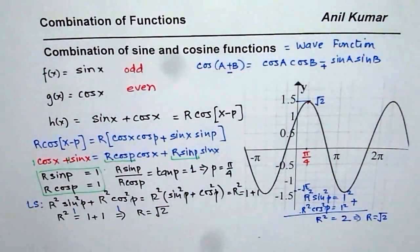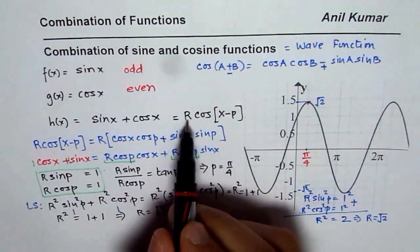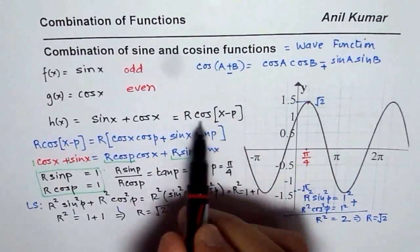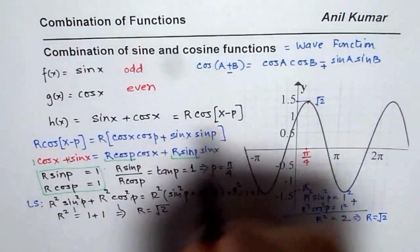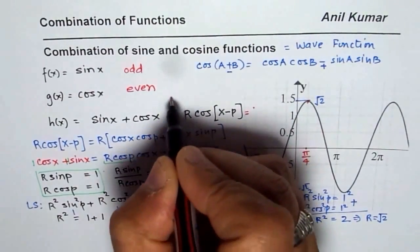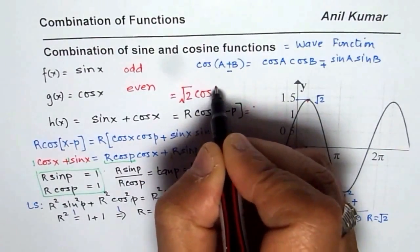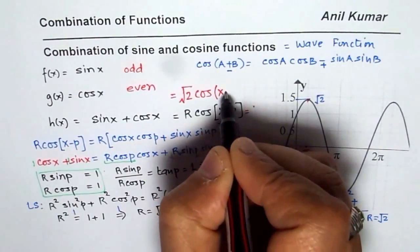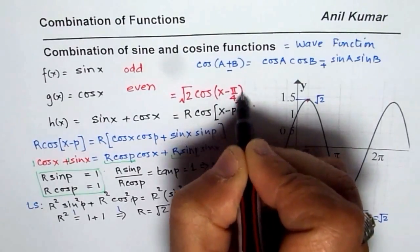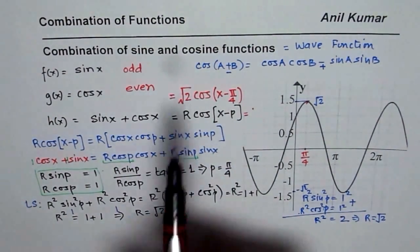So from all these calculations, what we can conclude here is that simple parent functions when combined together, as we did here, results into R cos(x-p). And that is, in this particular case, equals to square root of 2 cos(x - π/4). Do you see that? That is how it is related. So what really happens is, when you combine sine x and cosine x, then you always get a function which is sinusoidal, whose amplitude changes.